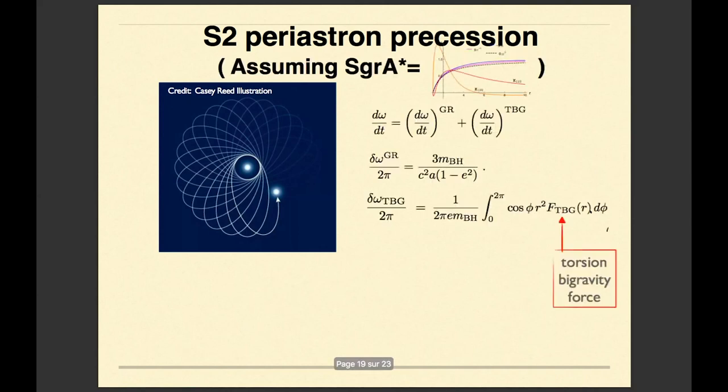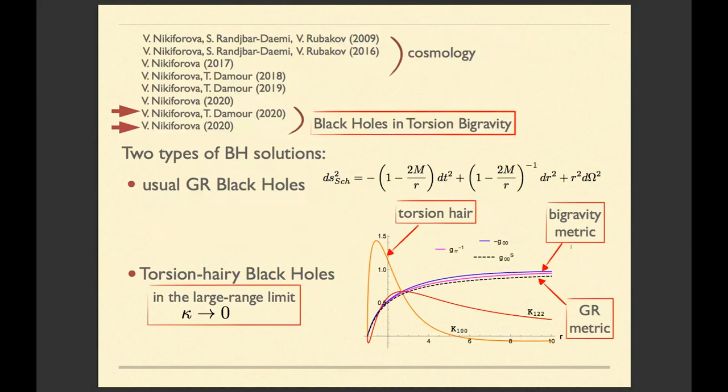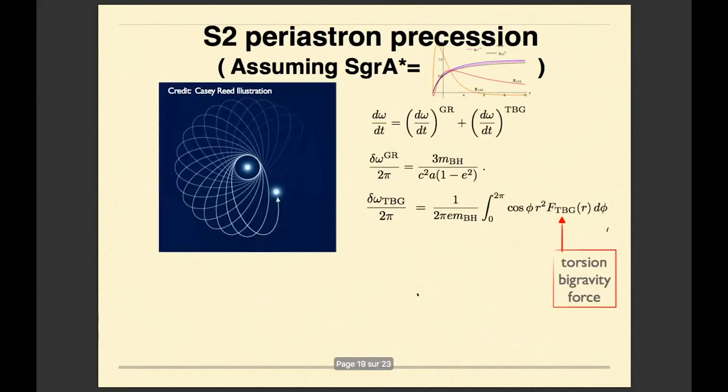And I asked myself, what if this black hole which is in the center of our galaxy is not a usual black hole of general relativity, but this second type of black hole, which I have in my model? What if this black hole is my black hole? What will we see in this case? What are the observational consequences?